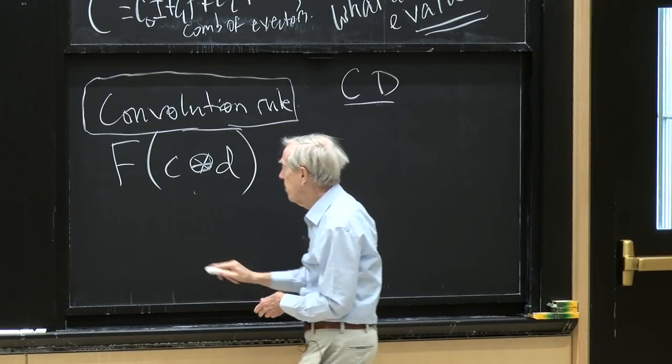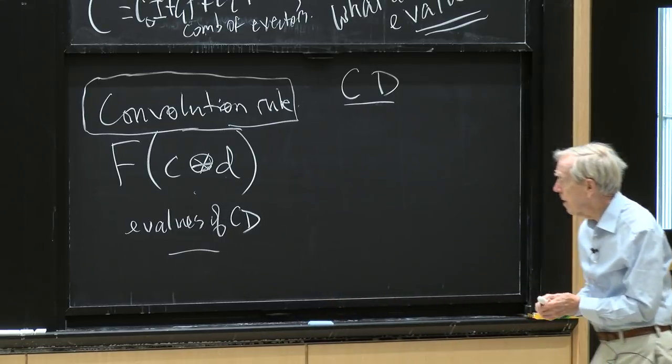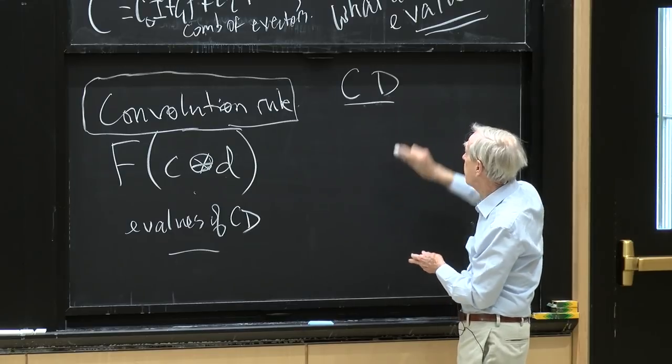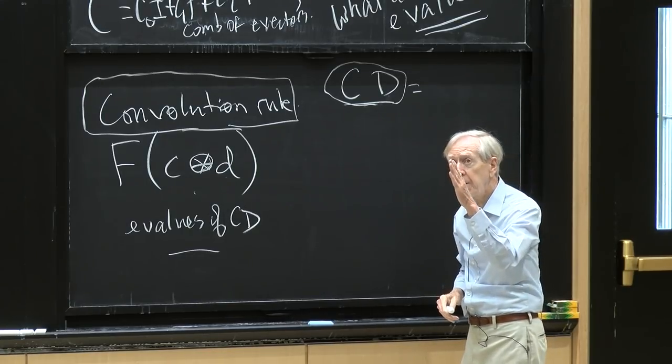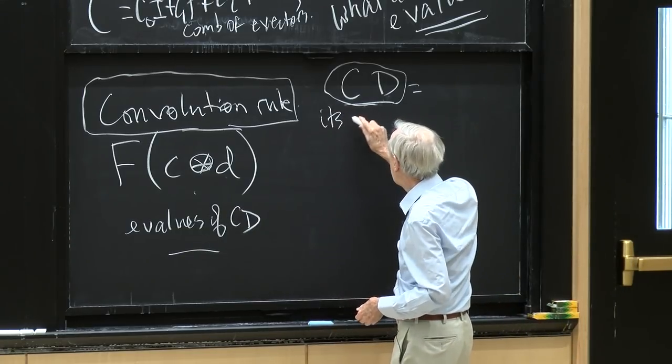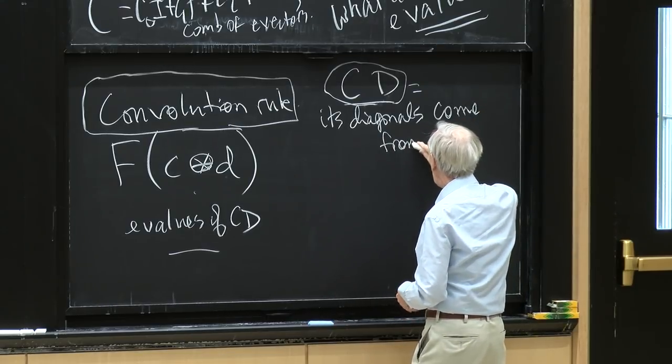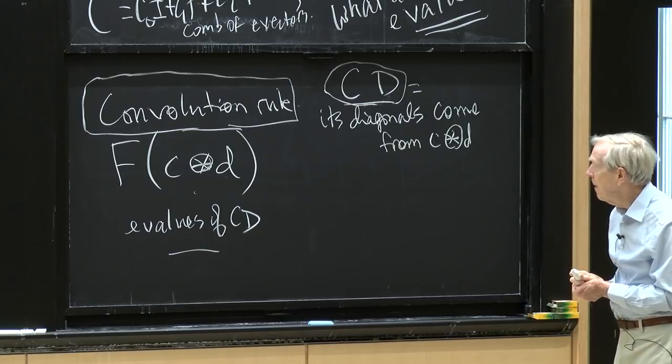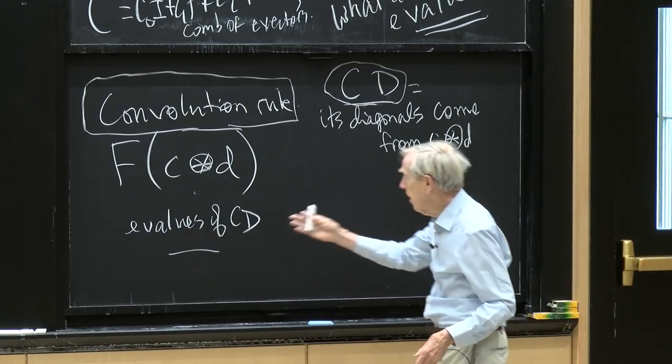So up here, the multiplication of matrices is C times D. I want to connect multiplying those matrices with convolving the C's. I want to make that connection. Right. So and that connection is the convolution rule. OK. So this would be the eigenvalues of CD. So let's just pause there. Why am I looking at the eigenvalues of CD? Because if I do that multiplication, I get another Toeplitz matrix, C times D.